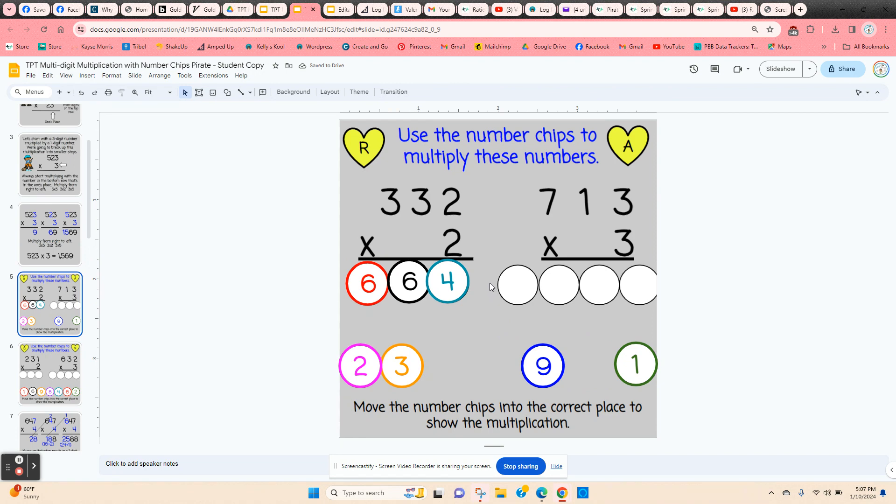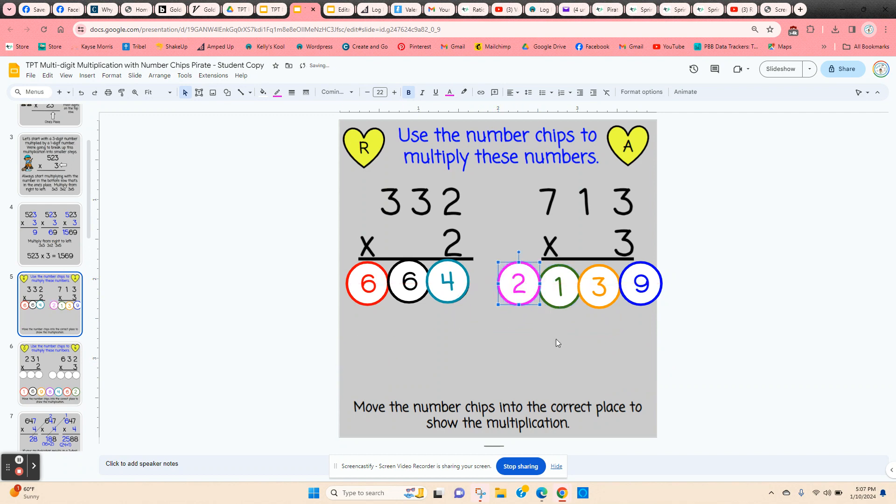Every number that they need is on every slide, so if they get to the end of a problem and the numbers aren't working, that means they've made an error somewhere and they need to go back and check. So 3 times 3 would be 9, 3 times 1 would be 3, and then 3 times 7 is 21.